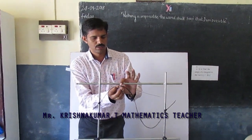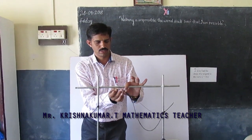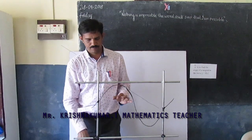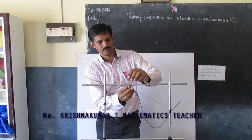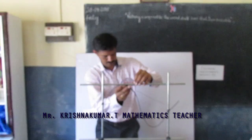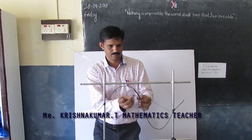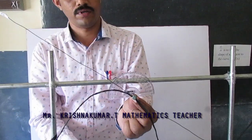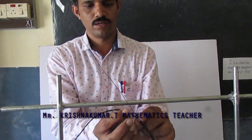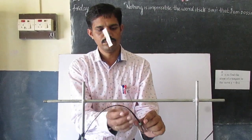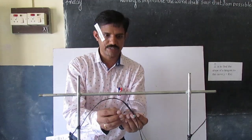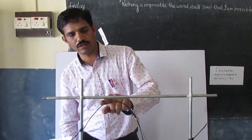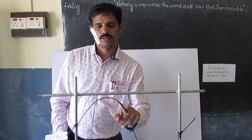Moving further to the right, we measure the angle between the tangent and the curve again. It is now about 40 degrees, and as I continue moving right the angle keeps increasing — around 70 degrees now. So first the slope was decreasing, then it reached zero, and then it started increasing again.